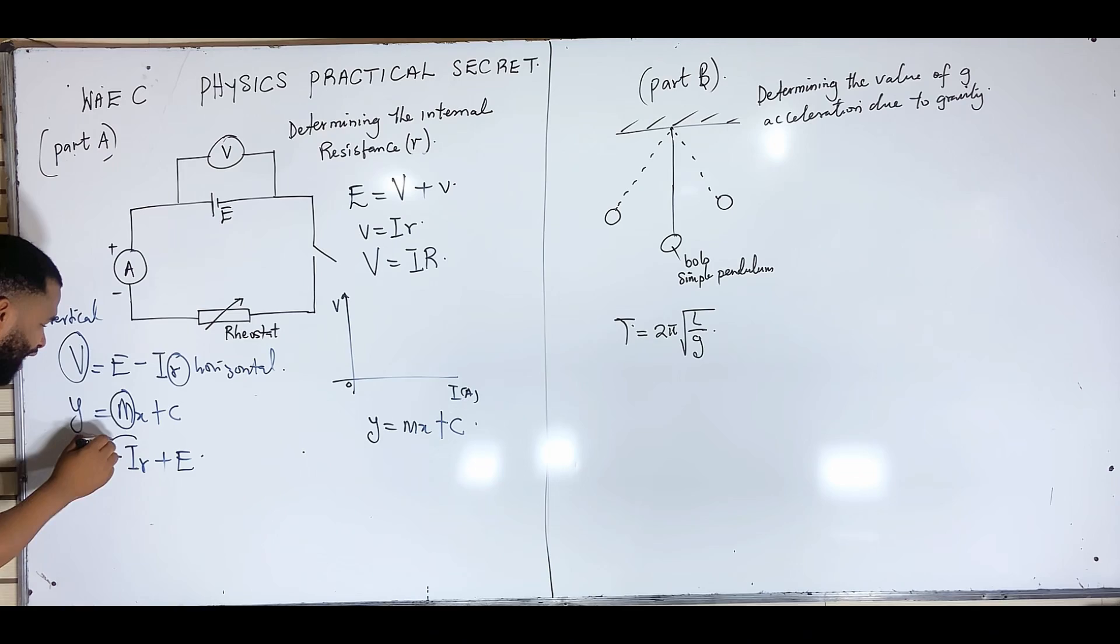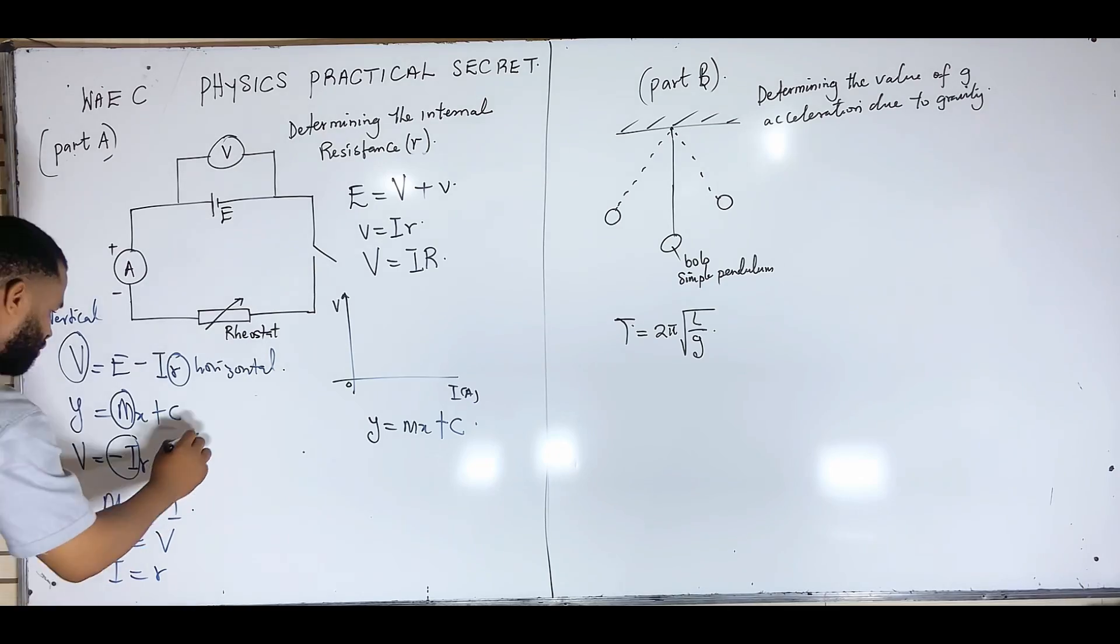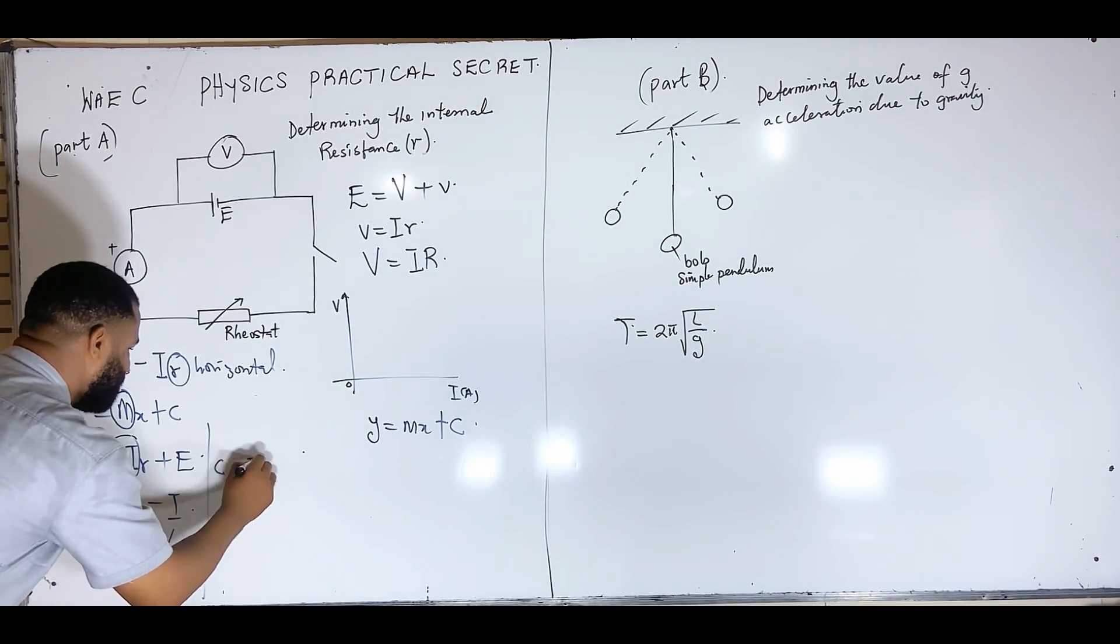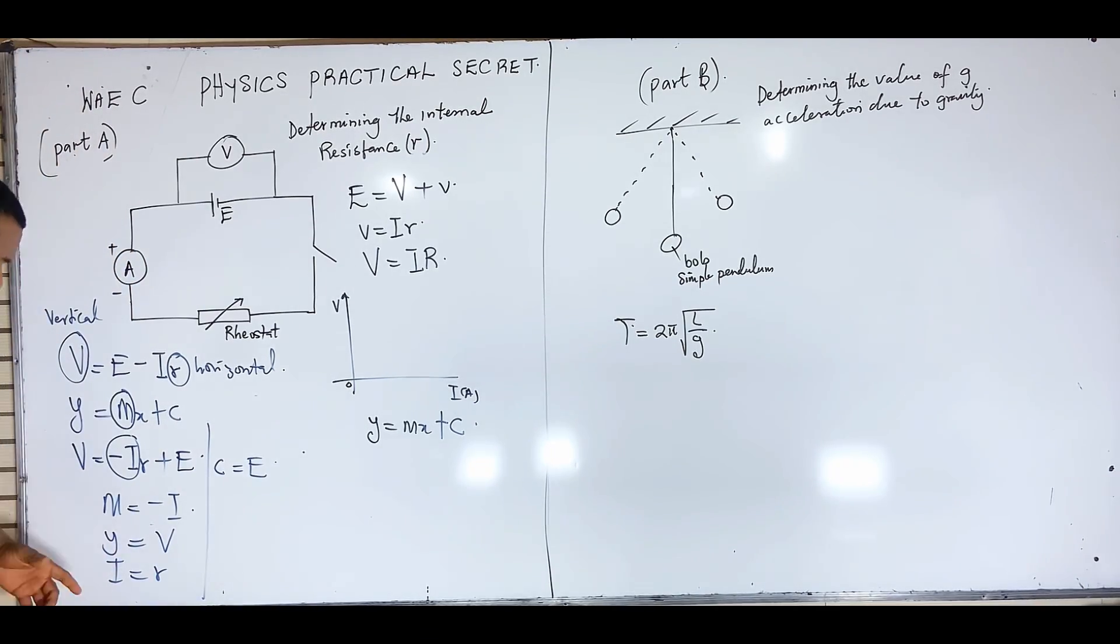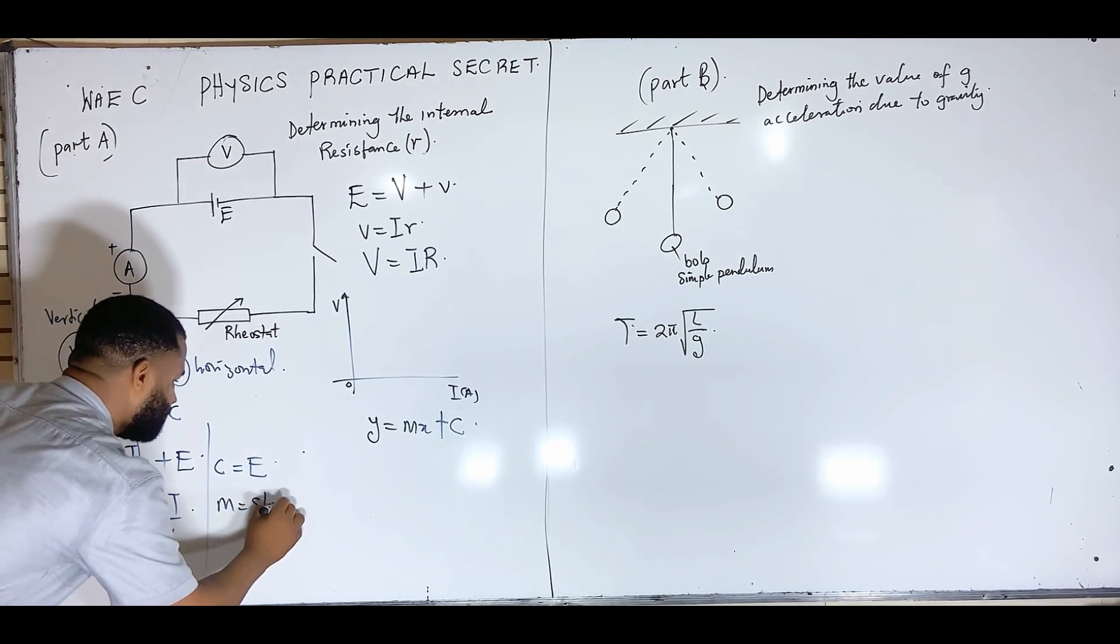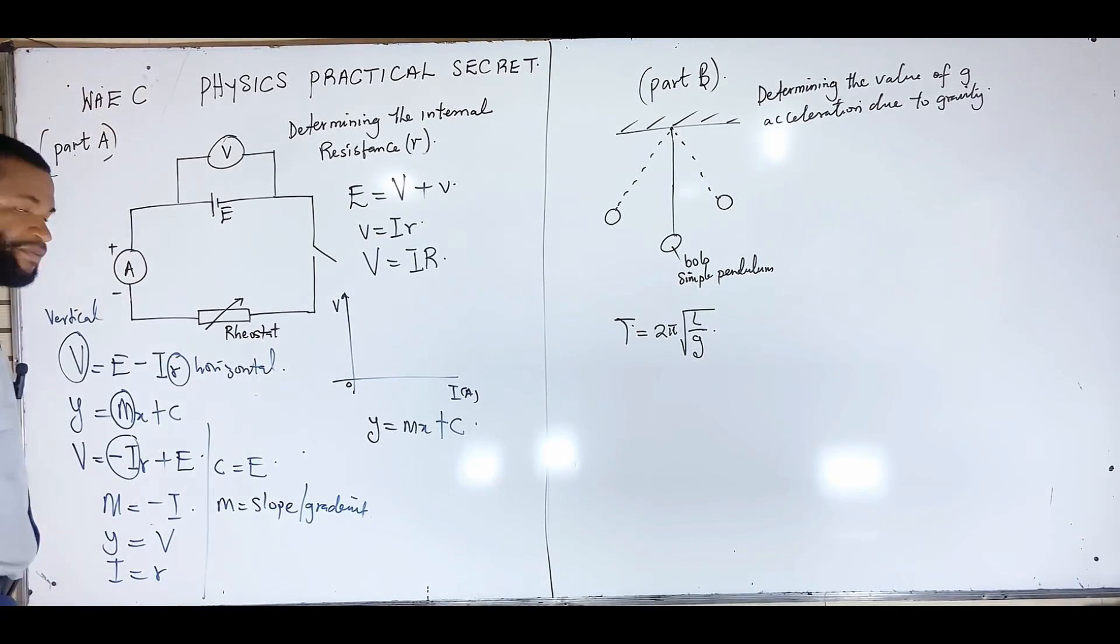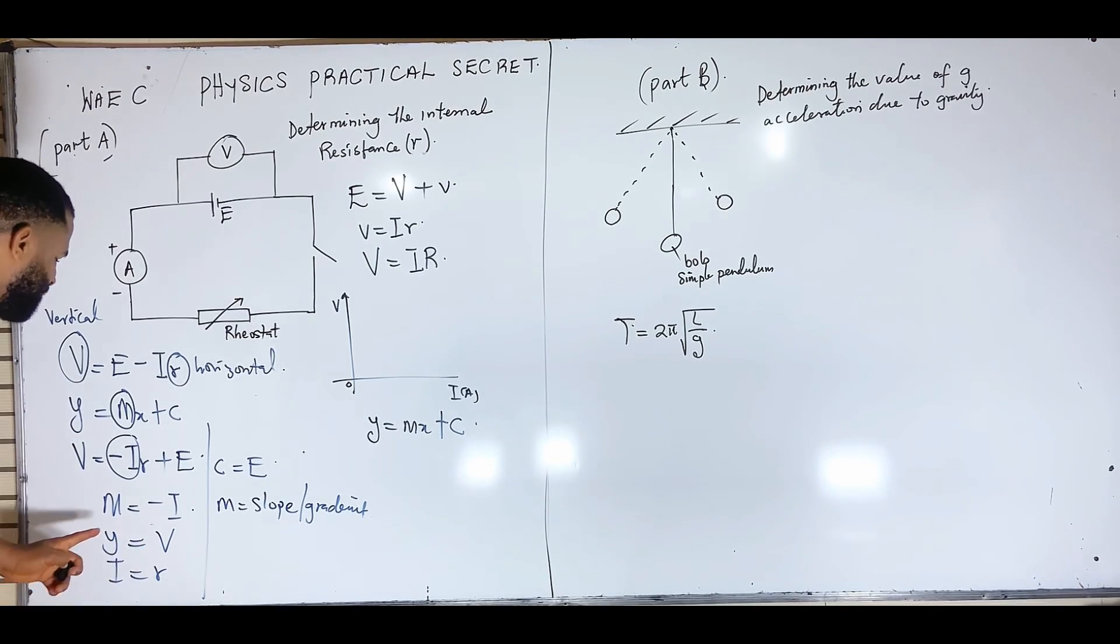Since V is on the vertical, I'm going to write it here. Since this X is horizontal and this R is horizontal, I'm going to have minus IR plus E. Now that you have done this, the next thing you are going to ask yourself is what does M represent? Because M and I are the same thing. M is equal to minus I.